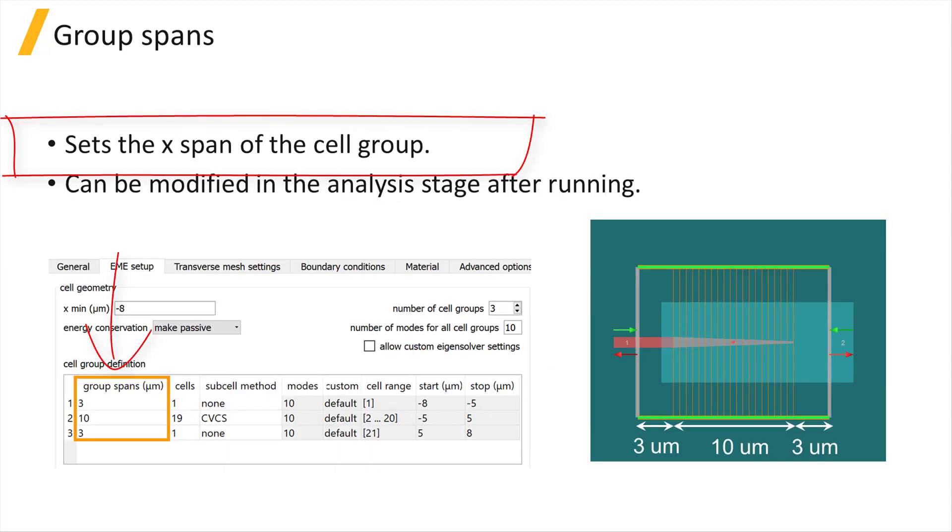GroupSpan sets the Xspan of the cell group. In this example we have a device with 3 cell groups. The first group starts at Xmin of the solver region. The next group starts from the Xmax of the previous group.